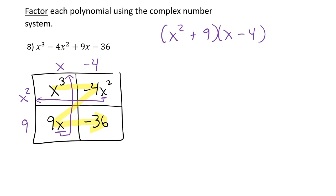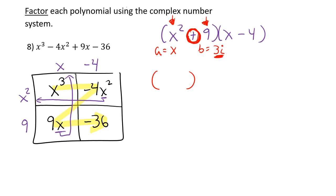I notice x-squared plus 9, so I check for a sum of squares. x-squared is a perfect square; 9 has two identical factors of 3. But there's a plus sign — when there's a plus sign, the b needs an i. Without i, you'd only get a minus sign (difference of squares), not a sum. So the factors are x plus 3i and x minus 3i. Combined with x minus 4, the full answer is (x plus 3i)(x minus 3i)(x minus 4).